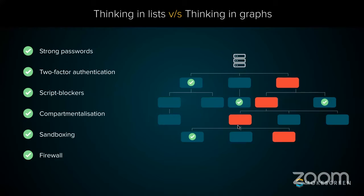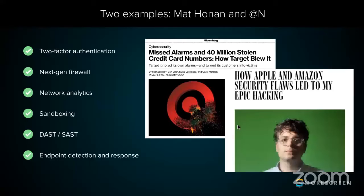This results in attacks like the Target breach, where really good tech was deployed — they had FireEye, quite capable tech that even detected attacks — but one thing missing in the checklist was whether every alert was actually being monitored. On the personal side, there's a story about a writer with a valuable Twitter handle where, despite having all sorts of security controls on his accounts, attackers found one set of steps that exploited gaps in those controls to take over his accounts, including the Twitter handle.